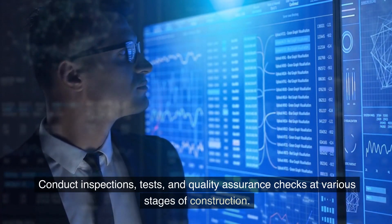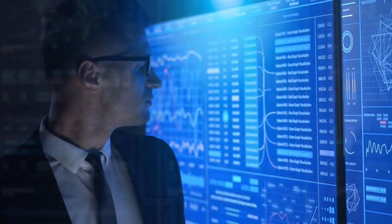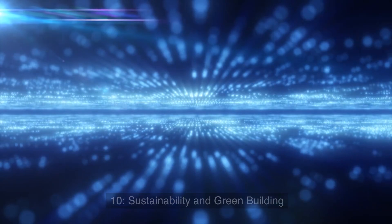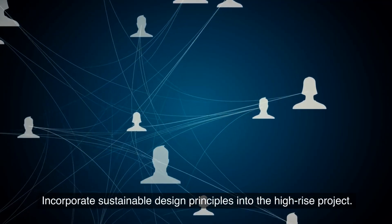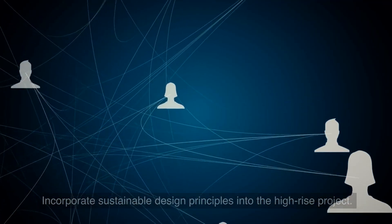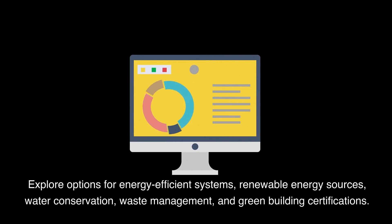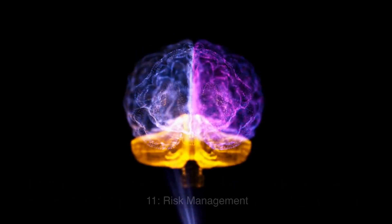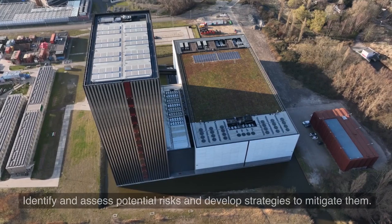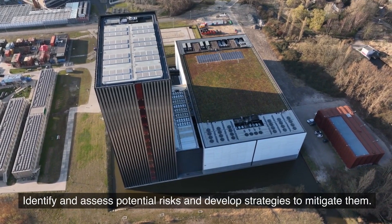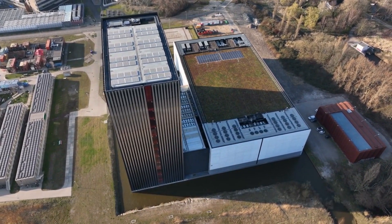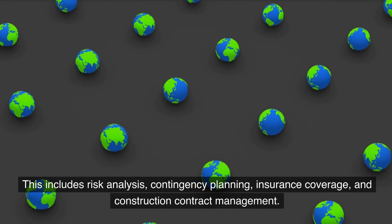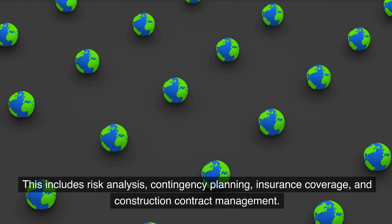Conduct inspections, tests, and quality assurance checks at various stages of construction. Step ten: sustainability and green building. Incorporate sustainable design principles into the high-rise project. Explore options for energy-efficient systems, renewable energy sources, water conservation, waste management, and green building certifications.